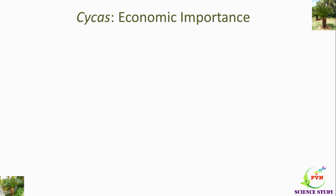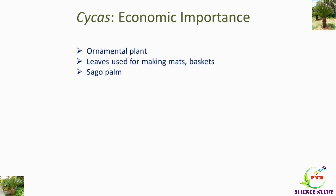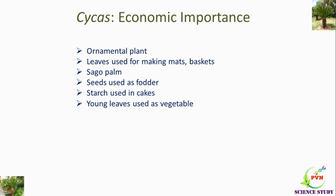Now we will study the economic importance of Cycas. Cycas is a very economically important plant and has several uses. Cycas is cultivated in gardens as an ornamental plant. Leaves of Cycas are used for making mats, baskets, hats, and other handicrafts. Cycas is also known as sago palm because a starch called sago is obtained from the stem pith of Cycas revoluta. Sago starch is used in the preparation of sabudana. Seeds of some species of Cycas are used as fodder for animals. The starch obtained from the seed is also used in cakes. Soft young leaves of Cycas are used as a vegetable in some parts of the world. Boiled seeds of Cycas rumphi are eaten by people living in the Andaman and Nicobar Islands.